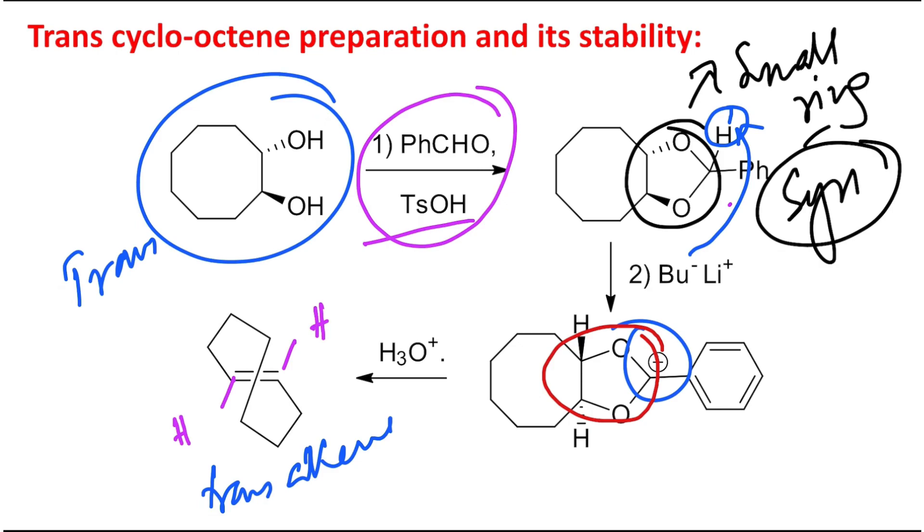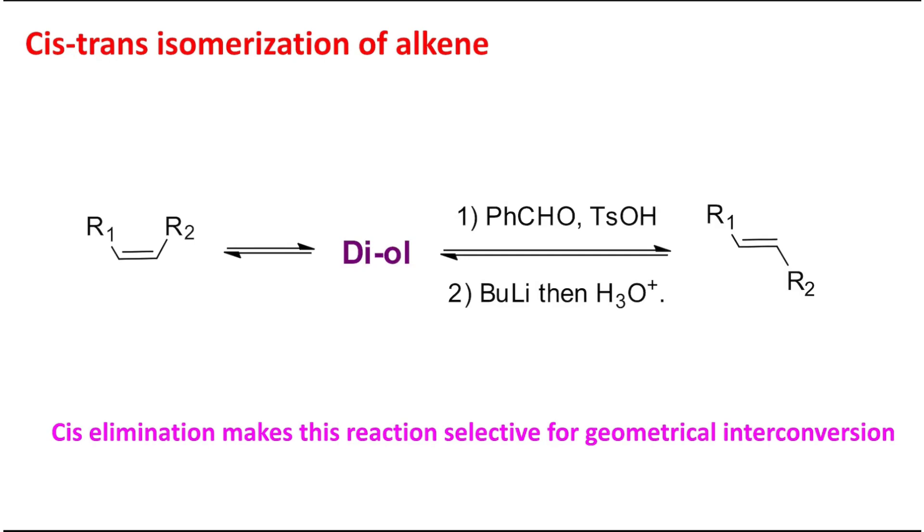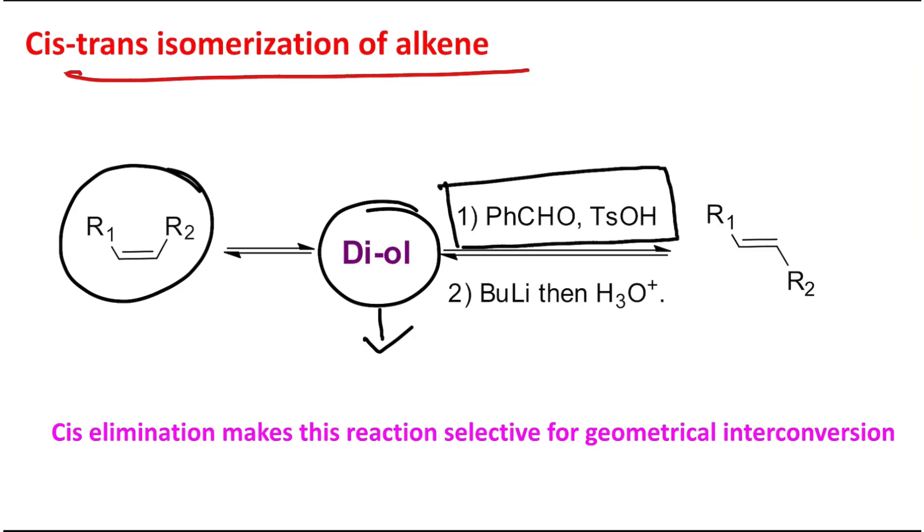This method of cis-trans isomerization of alkene is very interesting. Using this method you can convert one cis alkene into a trans diol. More specifically, if I say it's a trans diol, and later on this trans diol can react with benzaldehyde and p-toluenesulfonic acid, which will make this five-member acetal.